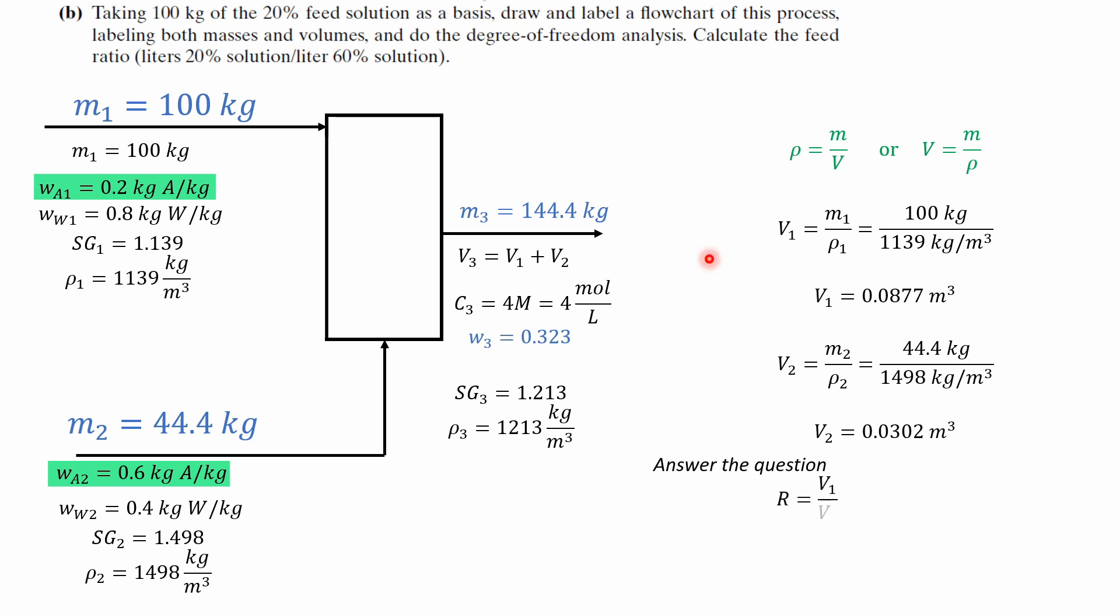We're going to get 0.087 M3 and for the second stream we're going to get about 0.0302 M3 and now we can answer the question which is to calculate the ratio of the volumes and plugging this in we get an answer of 2.9.